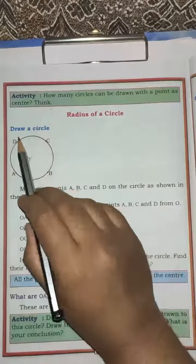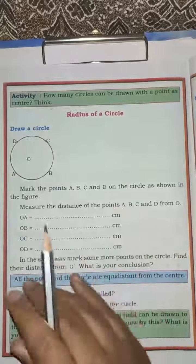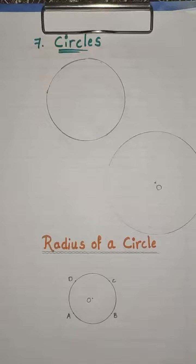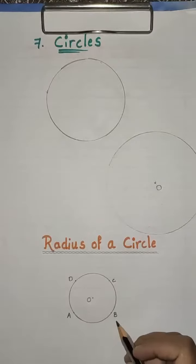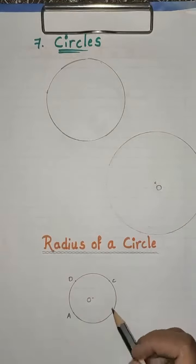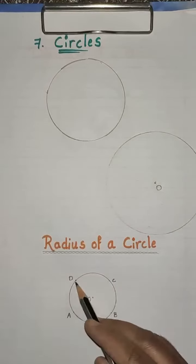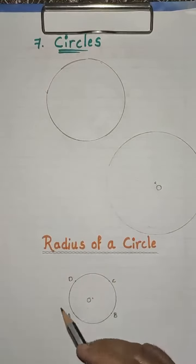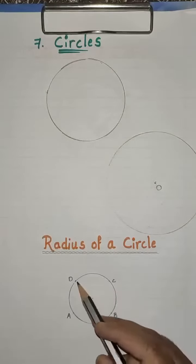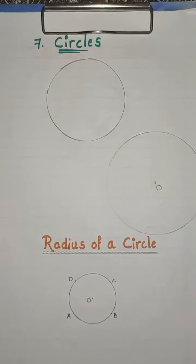So first draw a circle. Here is a circle. Children, can you see the points here? A, B, C, D. On the circle there are four points: A, B, C, D.